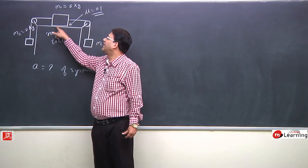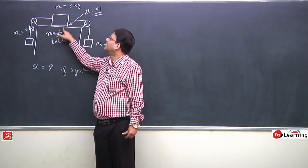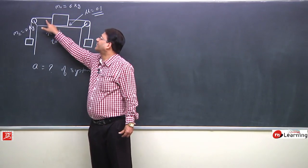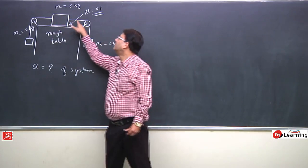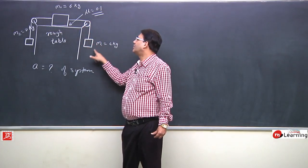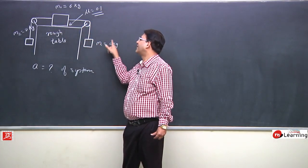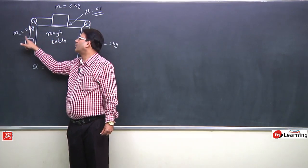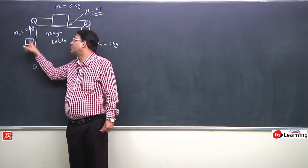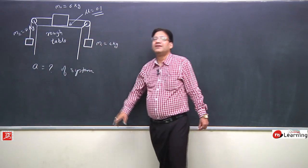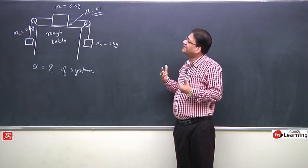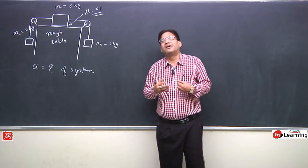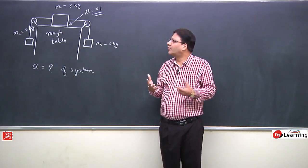On this rough table we have a block of mass M0, 6 kg. This block is tied with two ropes. One rope passes over the pulley to a block of mass M1, 4 kg, and the other string is tied to a block of mass M2, 2 kg. How will the system accelerate, and in which direction?